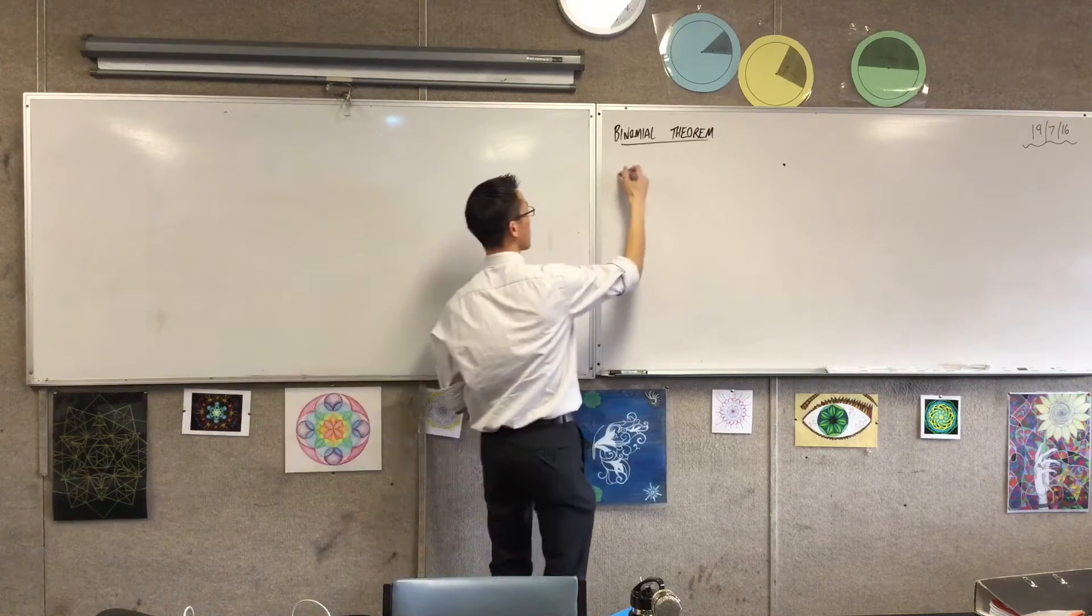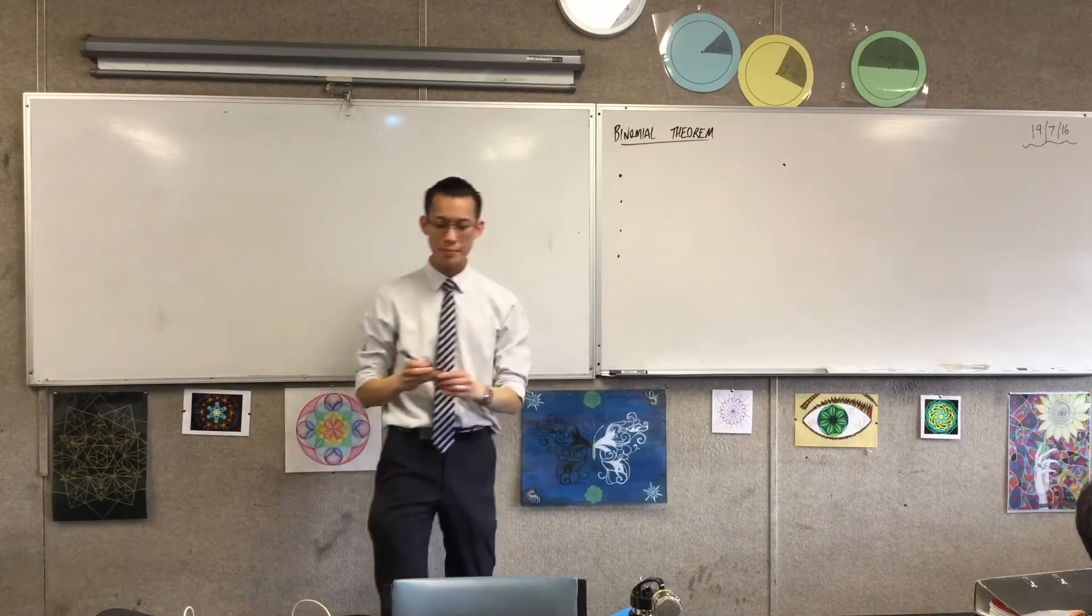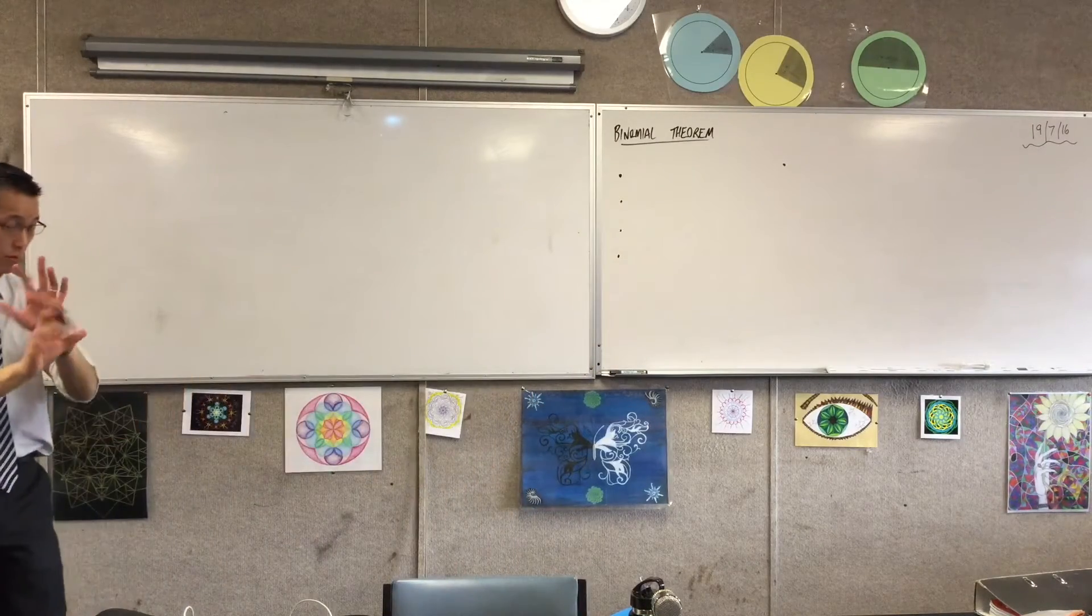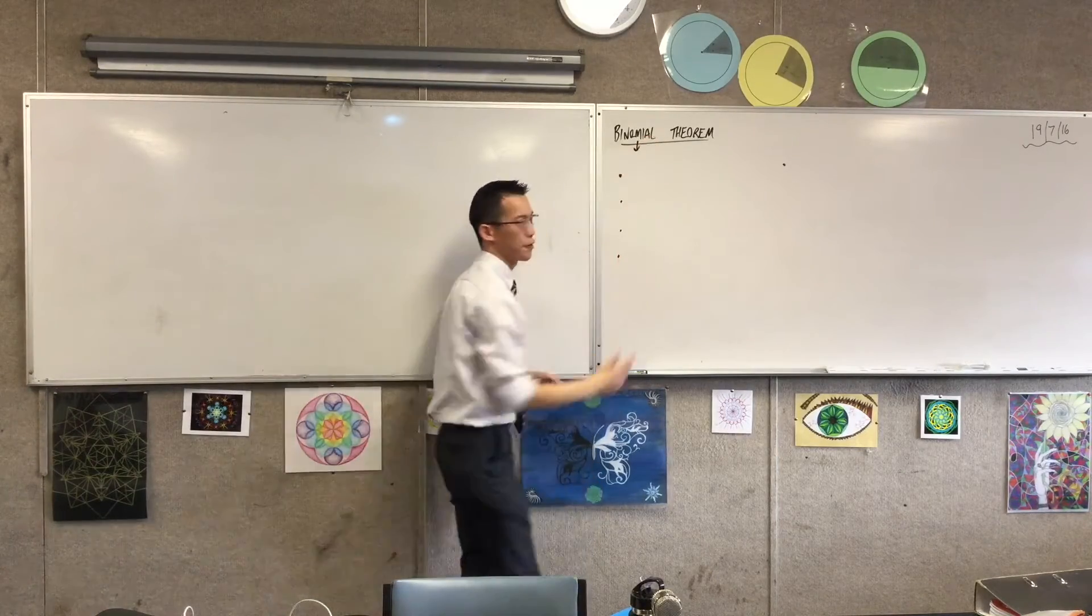There are four things - one, two, three, four - under binomial theorem that you already know how to do, skills, okay? So they all flow from this simple idea. They all flow from this simple idea.